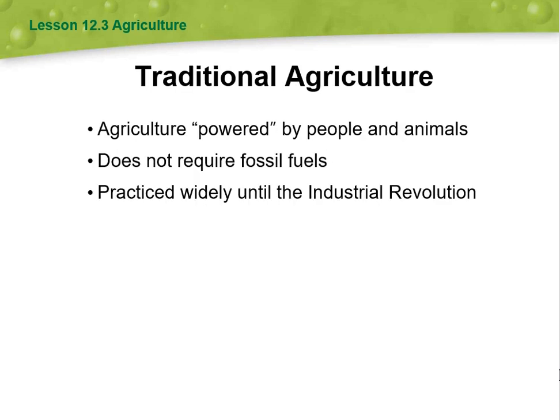Traditional agriculture, which is agriculture powered by people and animals, does not require fossil fuels and was practiced widely until the industrial revolution.